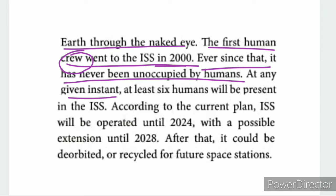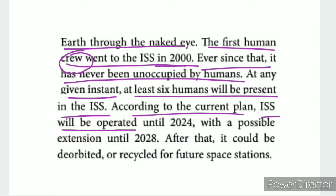At any given instant, at least 6 humans will be present in the ISS. According to the current plan, the ISS will be operated until 2024. All products have a date of expiry, and there is a possible extension until 2028.